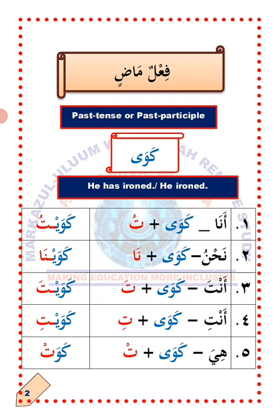Arba, number four — Anti, you. This term is only applicable to a single female person in Arabic that we are talking to directly. So how do we change the verb kawa to suit Anti? All you need to do is to attach tah carrying kasara to the last letter — step one. Step two: you give sukun to the letter before it. The verb kawa will now become kawaiti, which means 'you have ironed.'